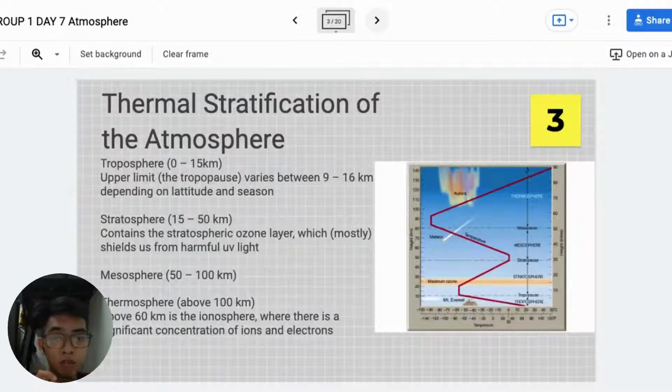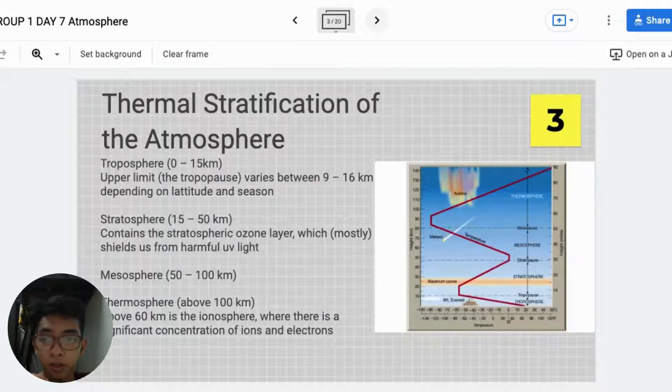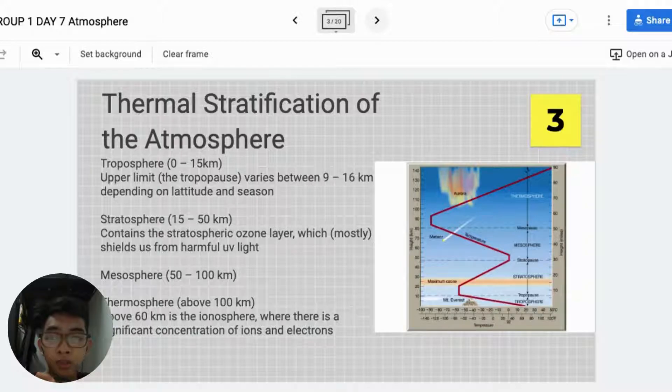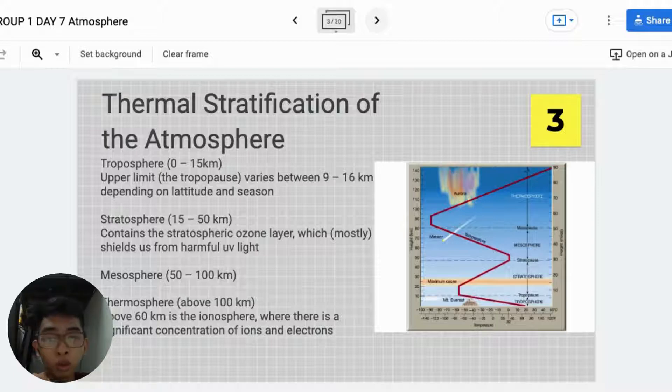Thermal Stratification of the Atmosphere. Troposphere: 0-15 km from the atmosphere. Upper Limit: The troposphere varies between 9-16 km depending on latitude and season. The stratosphere.